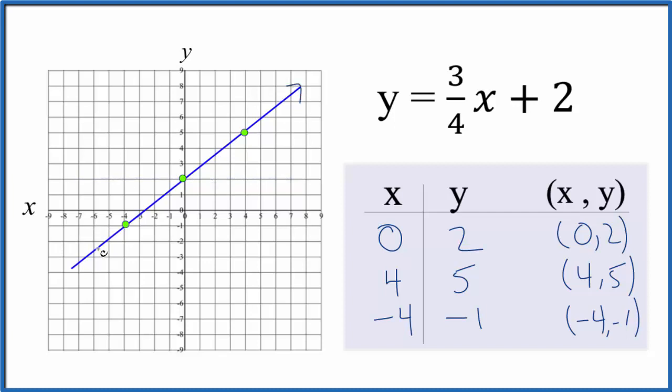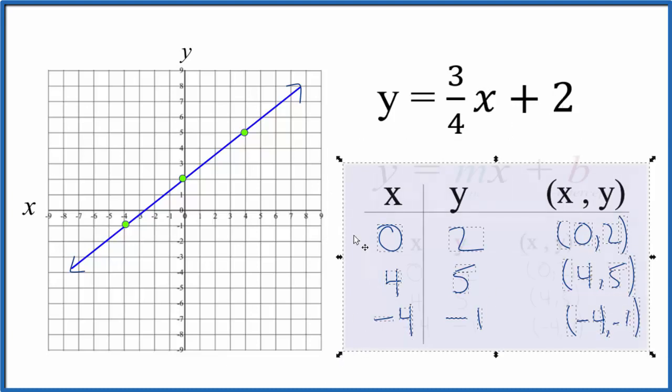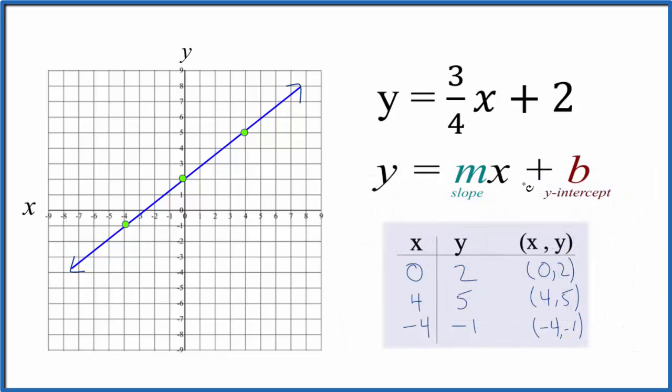Then we'll put arrows to show that it goes to infinity. So this is the graph for y equals three over four x plus two. Let's check our work with slope intercept formula. So we have y equals mx plus b. b, that's the y-intercept. So that's where we're going to cross the y-axis here. So on the y-axis, we go down and we find two right there.